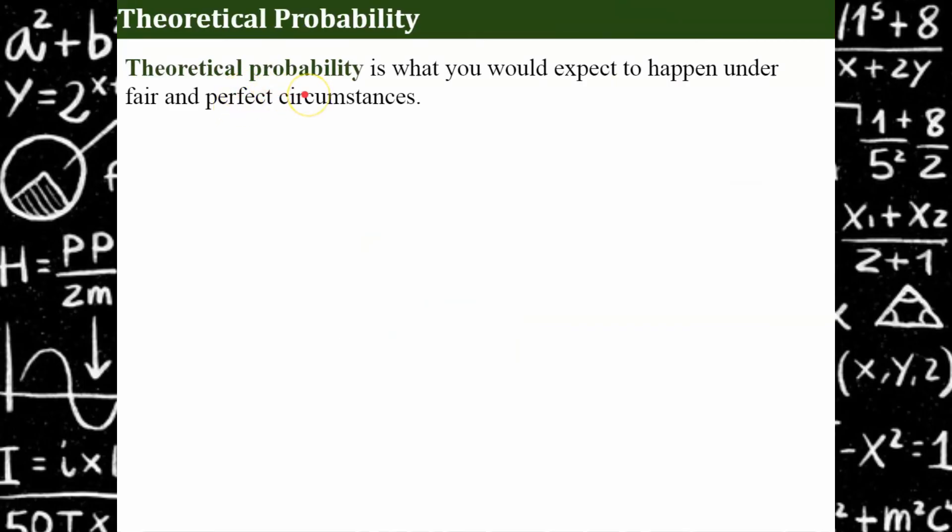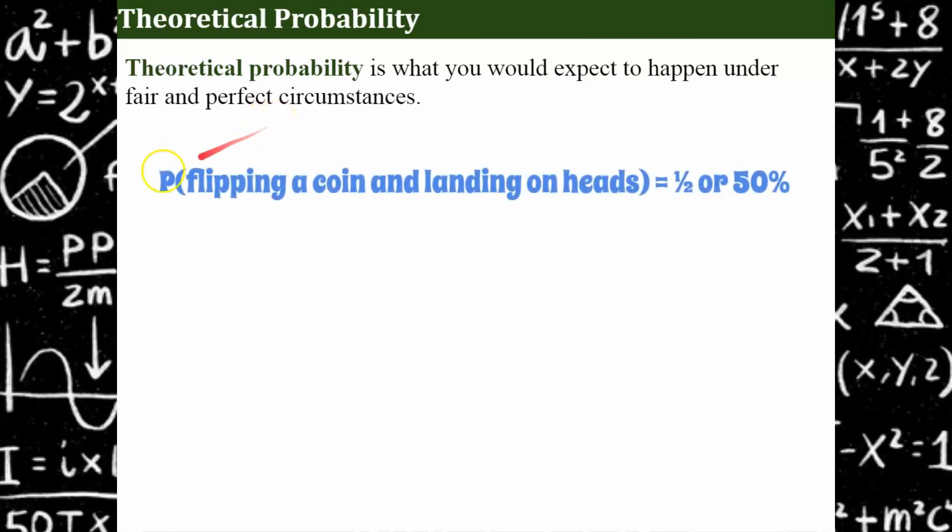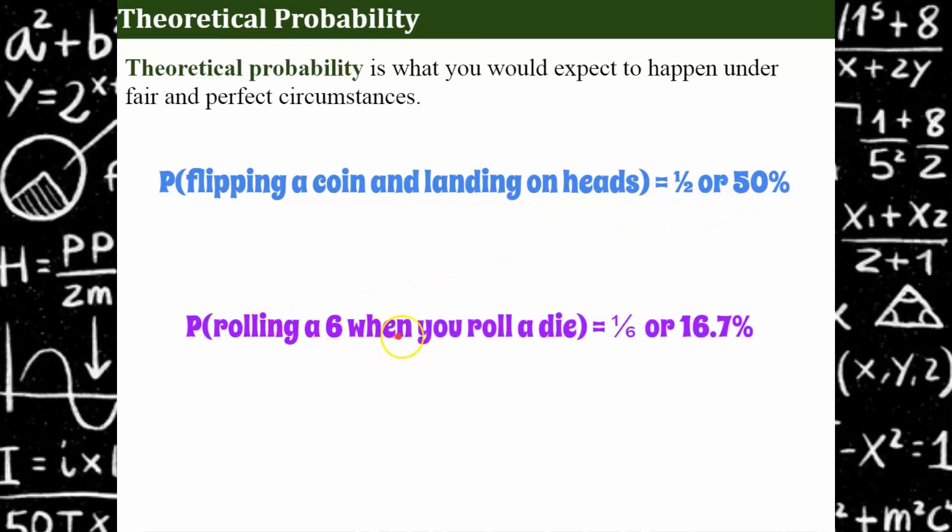Let's talk about theoretical probability. That's what we would expect to happen under fair and perfect circumstances. When we flip a coin and it lands at heads, we'd expect that to happen one out of two times or 50% of the time. When we roll a six and you roll a die, we would expect that to happen one out of six or 16.7% of the time.